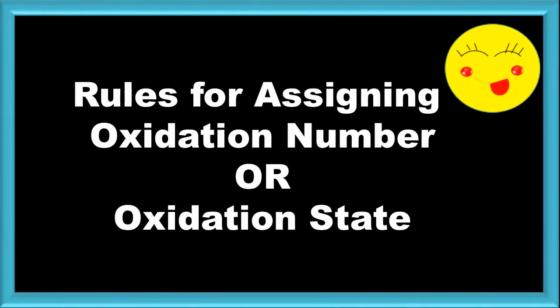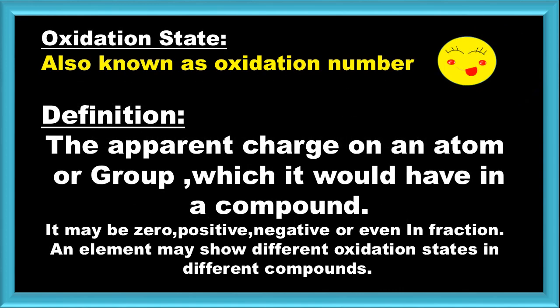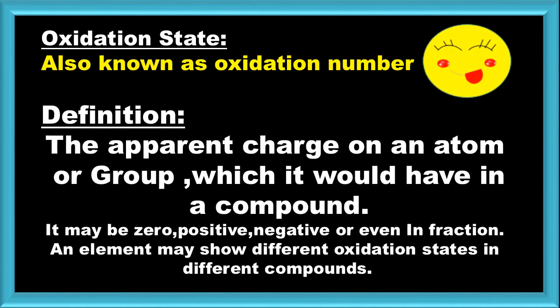How to Assign Oxidation Number. Oxidation state is also known as oxidation number. By definition, it is the apparent charge on an atom or a group which it would have in a compound. It may be zero, positive, negative, or even a fraction. An element may show different oxidation states in different compounds.